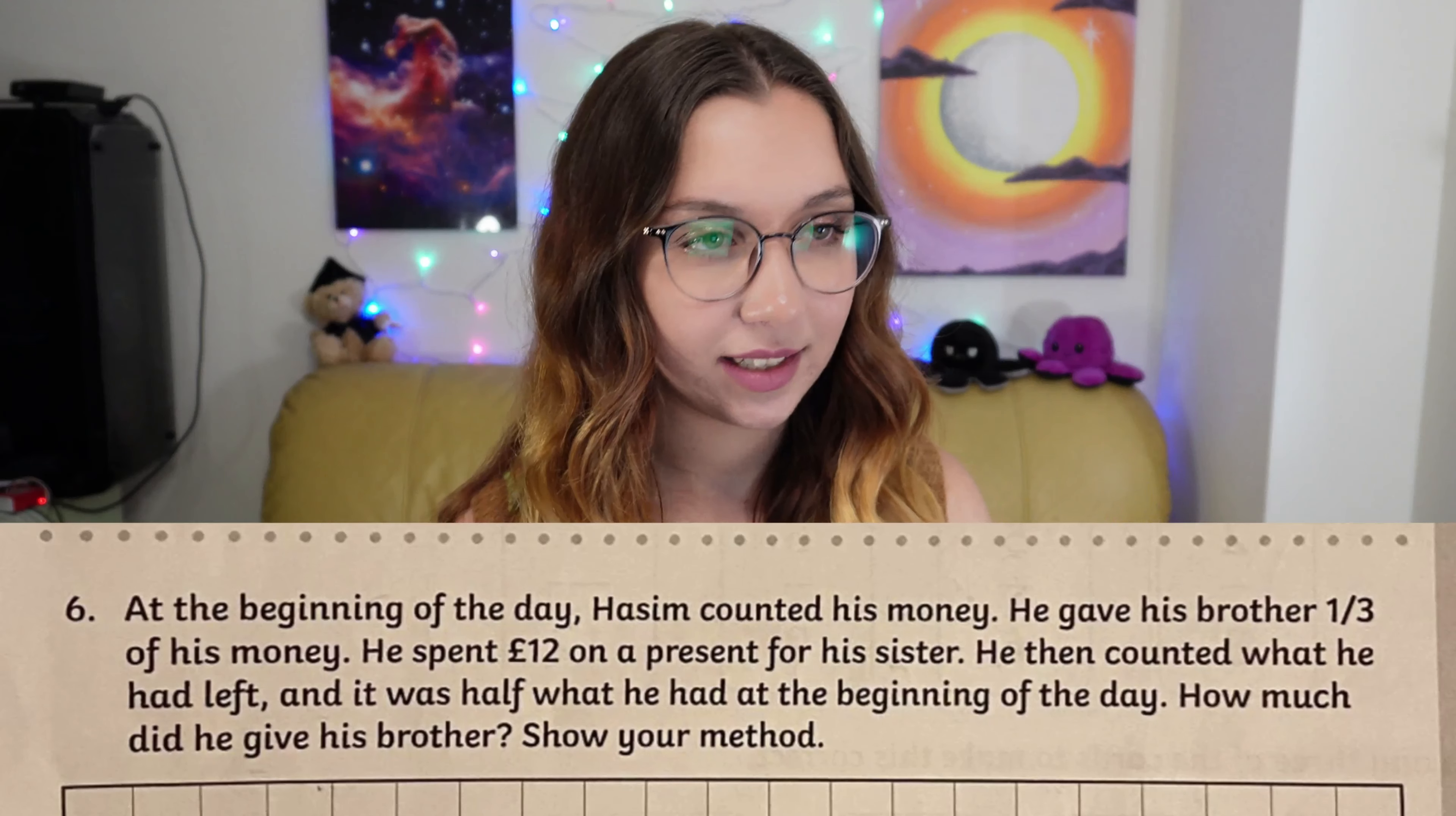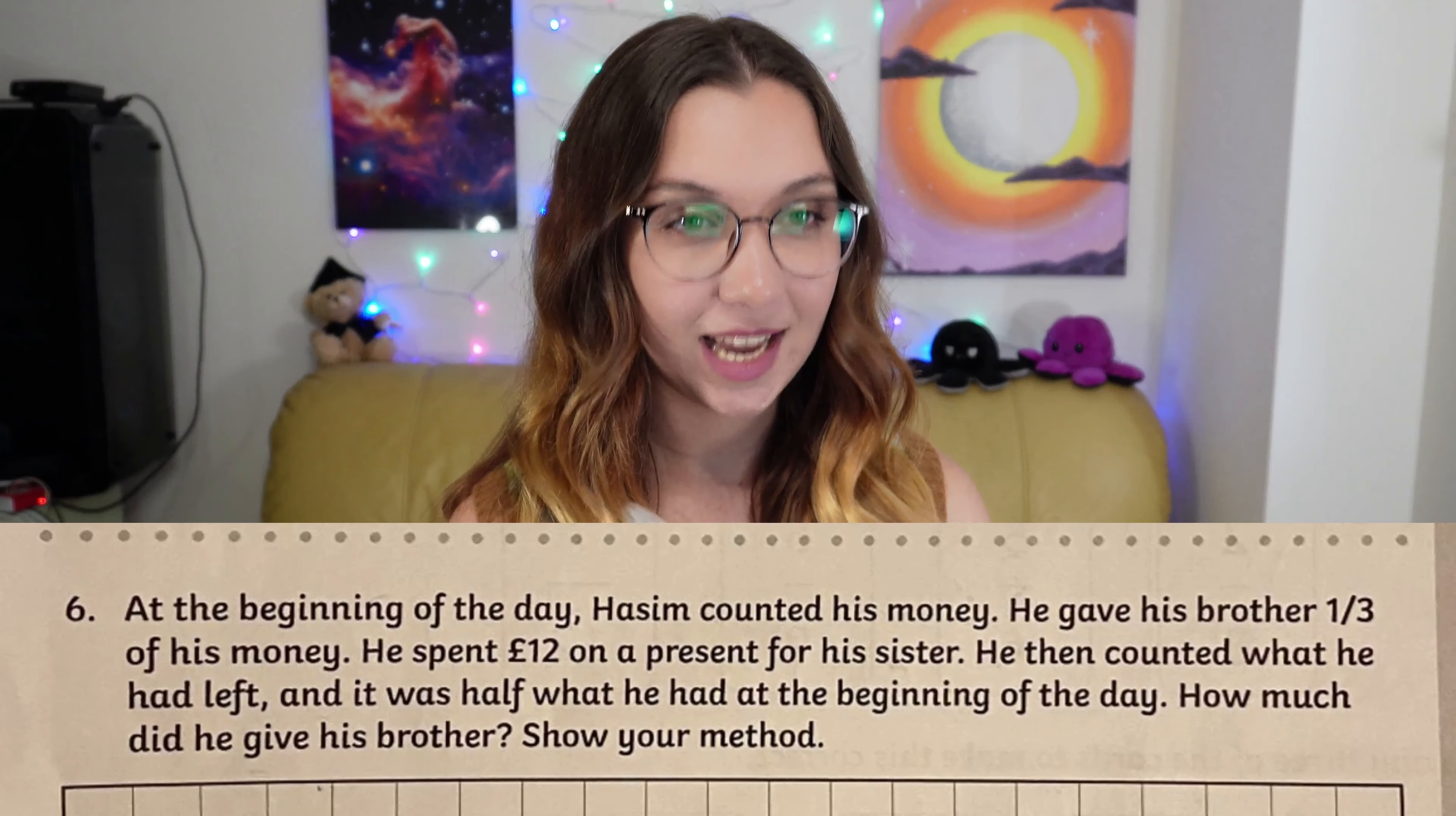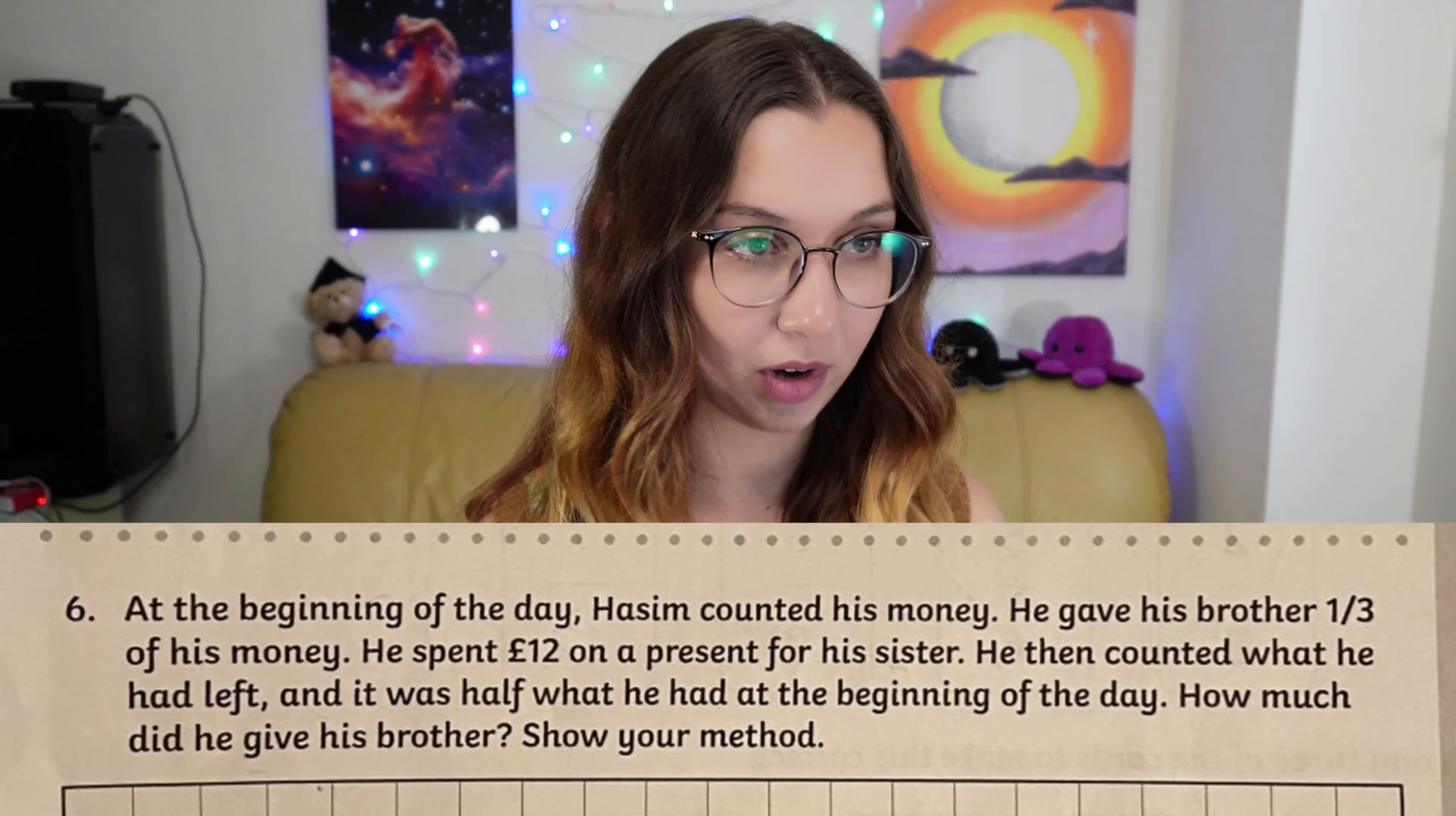At the beginning of the day, Hasim counted his money. He gave his brother one third of his money. He spent 12 euro on a present for his sister. He then counted what he had left, and it was half what he had at the beginning of the day. How much did he give his brother? Show your method.